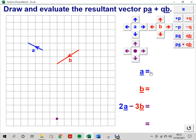First, write down A and B in column vector form. A is minus 2, 1, and B is minus 3, minus 2.